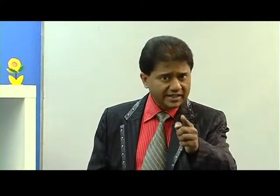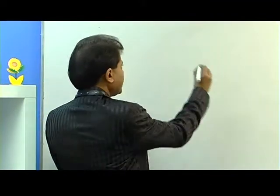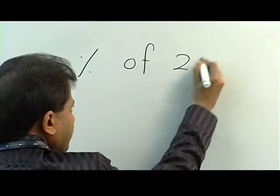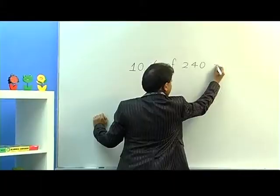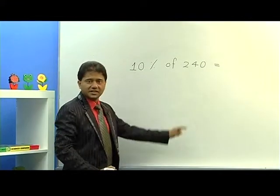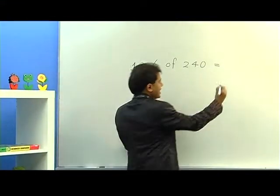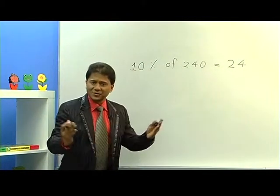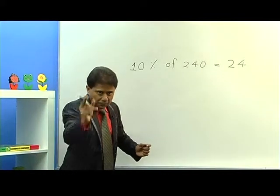Namaskar! Let me explain how to calculate 10%, 20%, and 50% of any number very fast. For example, if you have to find 10% of 240, all you have to do is just take away the zero, so you get the answer which is 24. Wasn't that very easy?